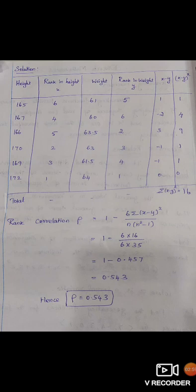The x value in height is 6, y value in weight is 5. So 6-5 = 1. 4-6 = -2. 5-2 = 3.